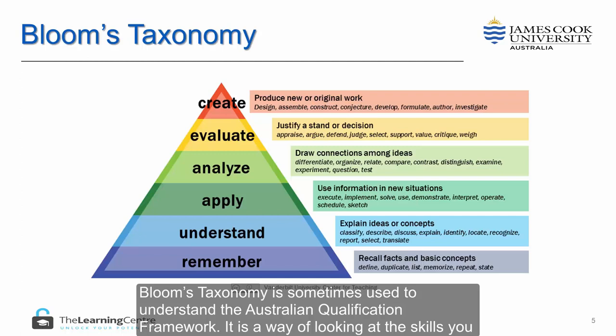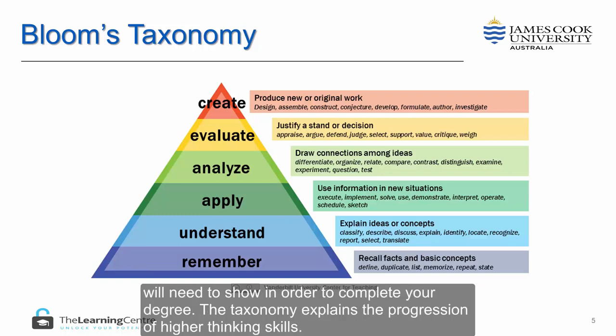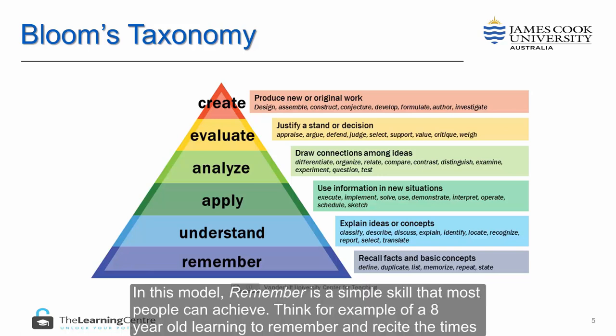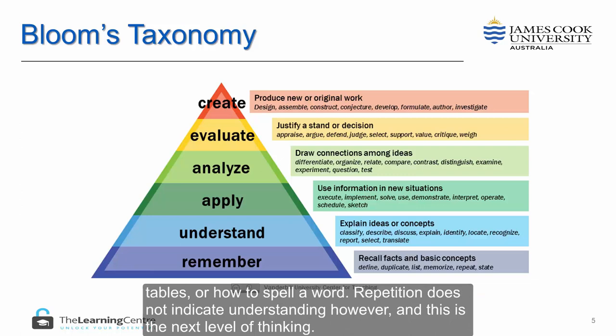Bloom's taxonomy is sometimes used to understand the Australian Qualifications Framework. It is a way of looking at the skills you will need to show in order to complete your degree. The taxonomy explains the progression of higher thinking skills. In this model, remembering is a simple skill that most people can achieve — think, for example, of an eight-year-old learning to remember and recite the times tables or how to spell a word.